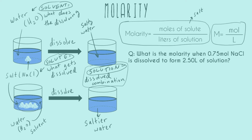Let's do a practice problem. What is the molarity when 0.75 mol NaCl is dissolved to form 2.50 liters of solution? We take our equation and check off what we have and what we don't have. We have the number of moles, we have the liters. An important thing here: it really has to be liters. A lot of times you'll be given milliliters, and if you are, you're going to have to convert into liters before you can plug in.